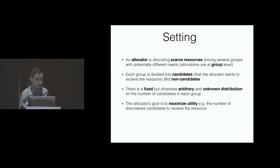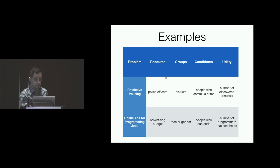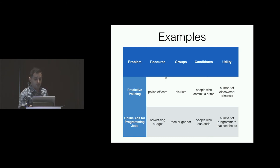We assume each group is divided into two parts: the candidates that the allocator wants to receive the resource, and the rest. There is a fixed distribution over candidates in each group, but the allocator does not know this distribution. The allocator's goal is to maximize some sort of utility — for example, the expected number of candidates who receive the resource. The first example is predictive policing: the resource is police officers, the groups are districts in the city, and the candidates are people who commit crimes. The utility is the number of discovered criminals, though we fully acknowledge policing can have other goals such as preventing crime or fostering community relations.